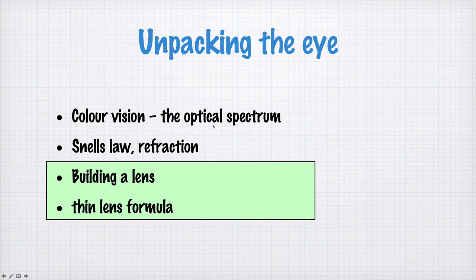Okay, so we've done color vision, the optical spectrum, Snell's law and refraction. Now we need to move on to building a lens and a formula for calculating how lenses work.